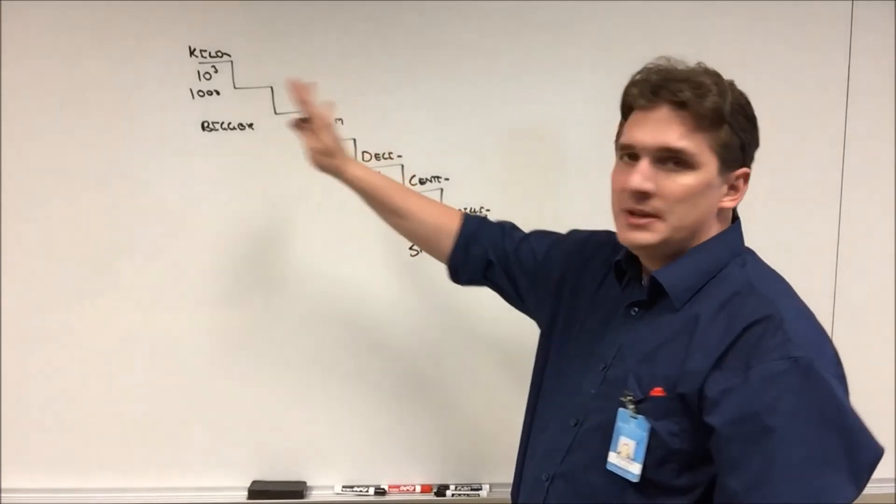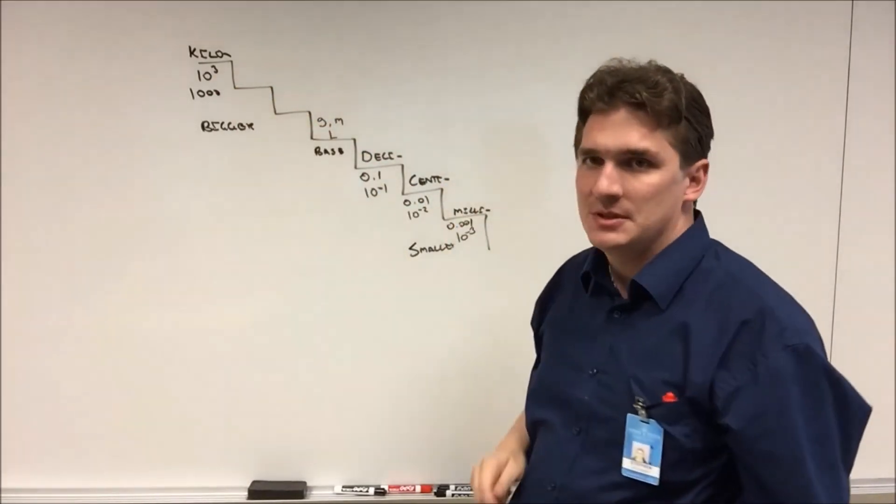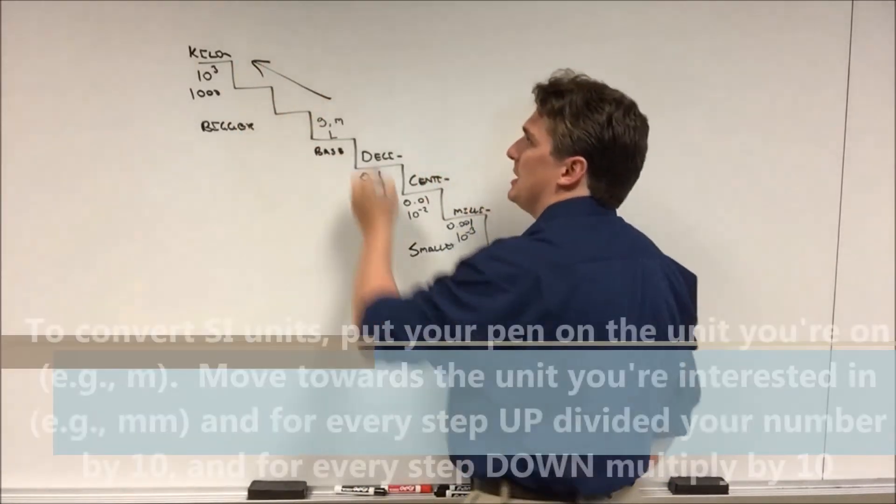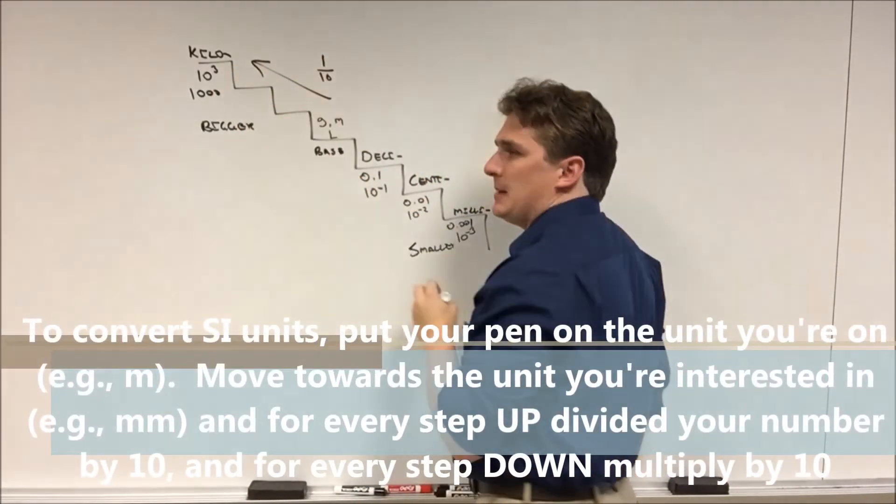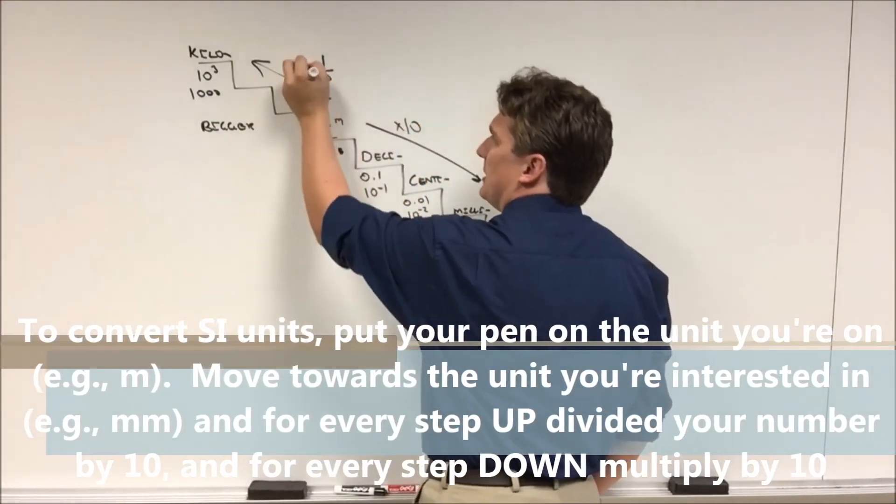So let's say you want to convert between meters, kilometers, or grams and milligrams. Every time you go up, every step you take up, you're going to divide by 10. And every time you go down, you're going to multiply by 10.